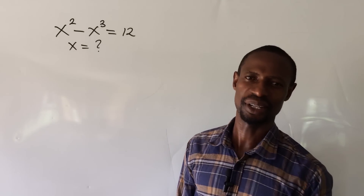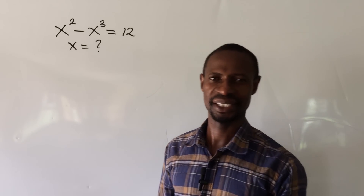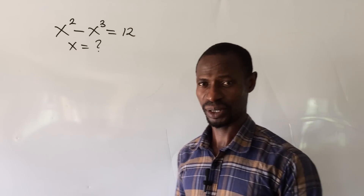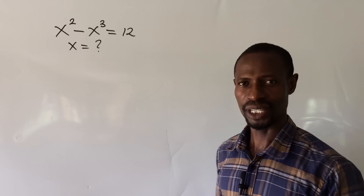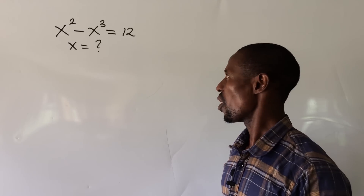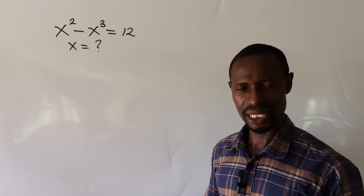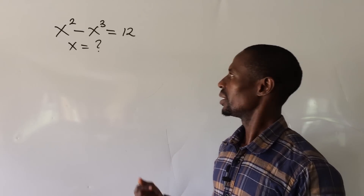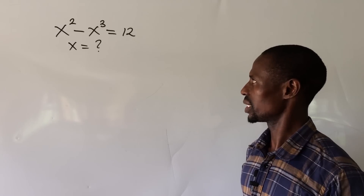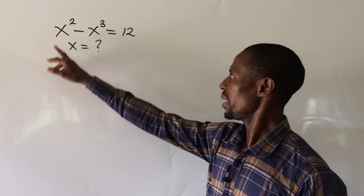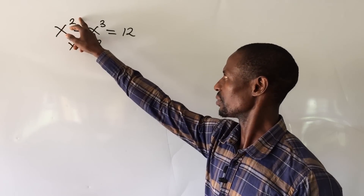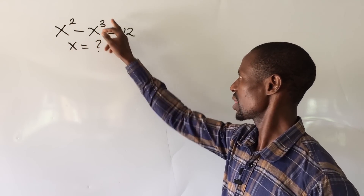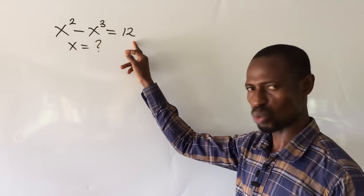Welcome to Online Math TV. My name is Jakes Animal. We have a challenge on the board. It's an only-paired question. The question reads: x to the power of 2 minus x to the power of 3 equal to 12.